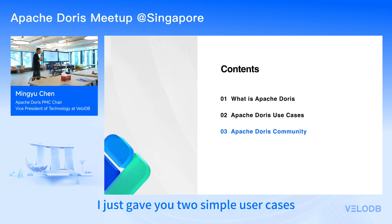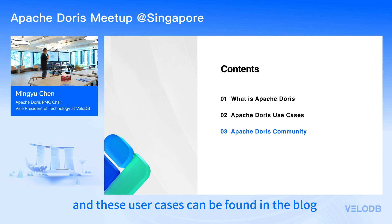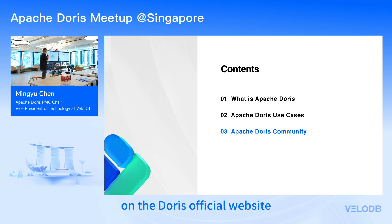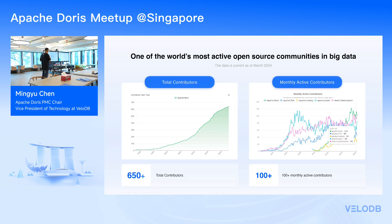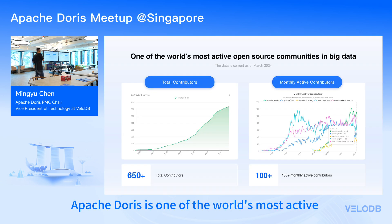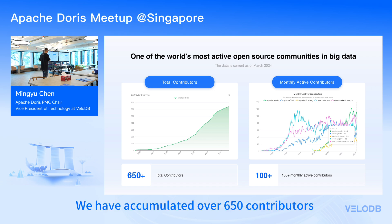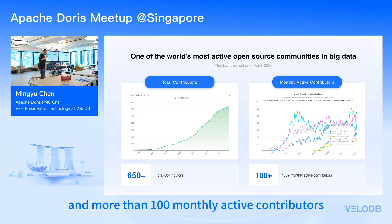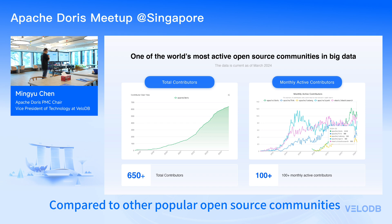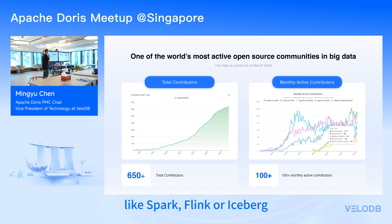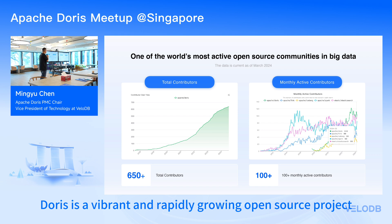These user cases can be found in blogs on the Doris official website. Apache Doris is one of the most active open source communities in the big data area, with a cumulative 650 contributors and more than 100 monthly active contributors. Compared to other popular open source communities like Spark, Flink, or Iceberg, Doris is a vibrant and rapidly evolving open source project.